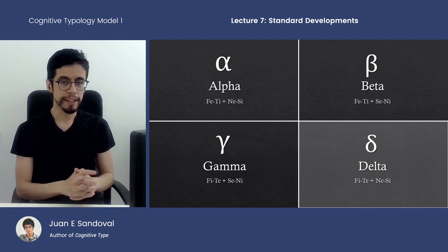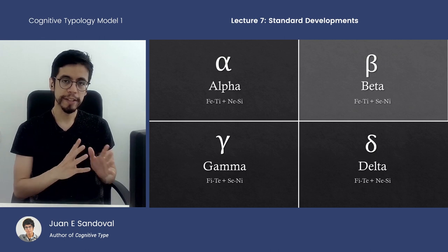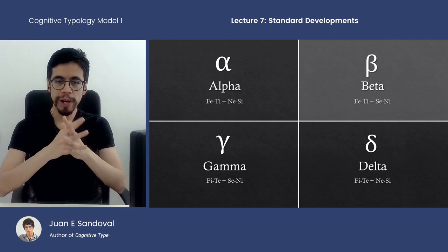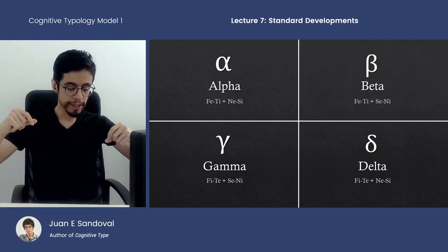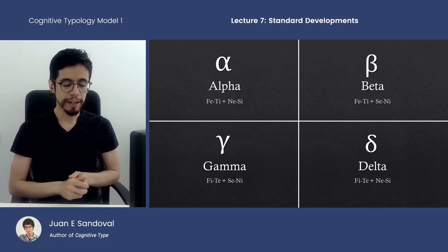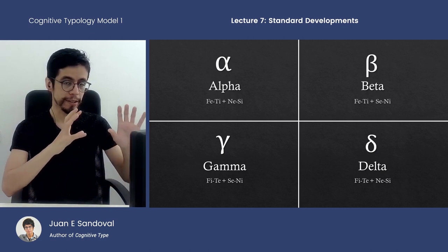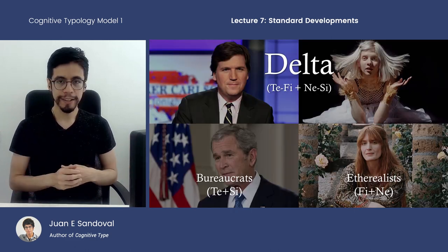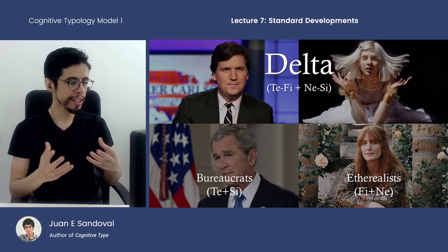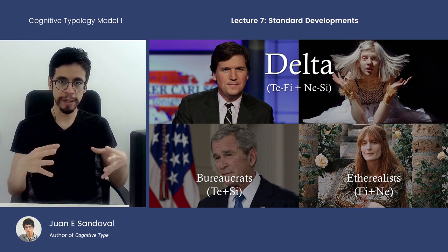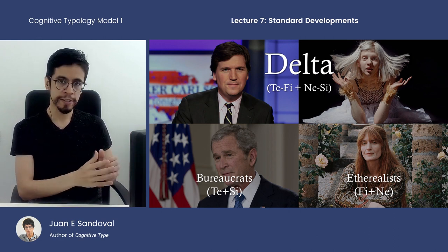When you have the FETI axes combined together with the SENI axes, you get the beta types. To ask the question of whether the alpha, beta, gamma, and delta quadrants are real, we have to look at whether or not we can extract out discrete realities from these concepts. To paint the full picture of the quadrants, we look at it from the combination of the conductor types and the revisor types together.